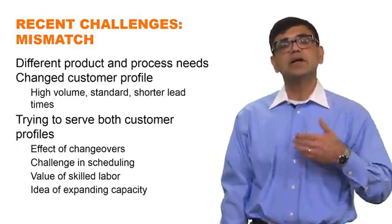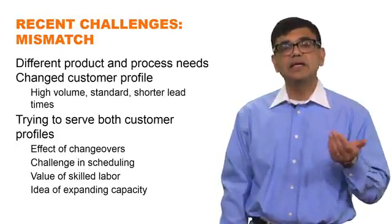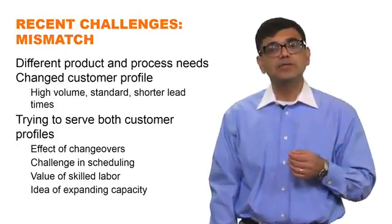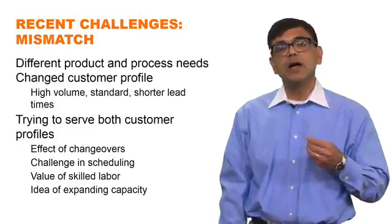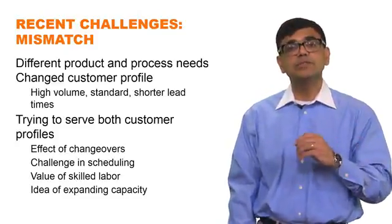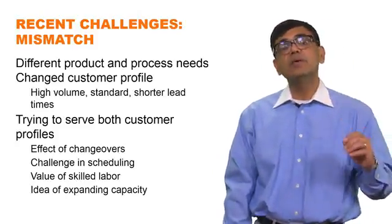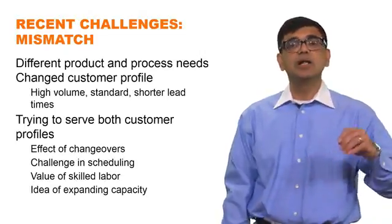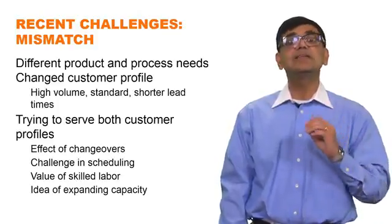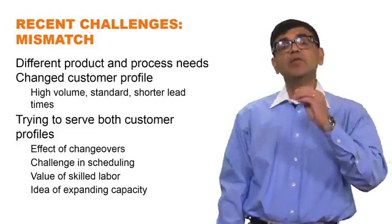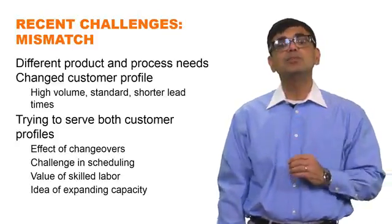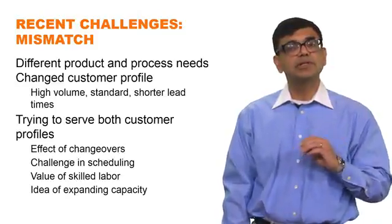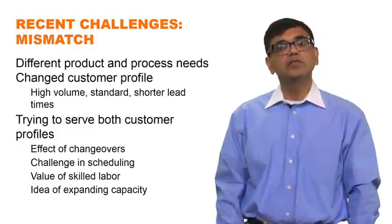In a job shop, they don't consider setup times to be a significant issue. But now, with high volume and low volume orders mixed together, low volume orders get stuck behind large volume orders, and large volume orders have to be broken up to avoid keeping low volume orders waiting too long. This increases the number of changeovers, making scheduling extremely challenging — how do you schedule customized and large volume orders without creating excessive lead times?